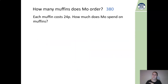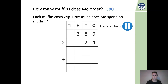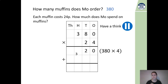Now here's the next step — an additional challenge. Each muffin costs 24p. How much does Moe spend on these muffins? So our calculation is 380 multiplied by 24. Our first sum is 380 multiplied by 4: 4 times 0 is 0, 8 multiplied by 4 — we get 32, so write down our 2 and carry that 3 into our 100s. 3 multiplied by 4 is 12, add that additional 3 gives 15 — and because there are no additional numbers to add on, we write 15 across.